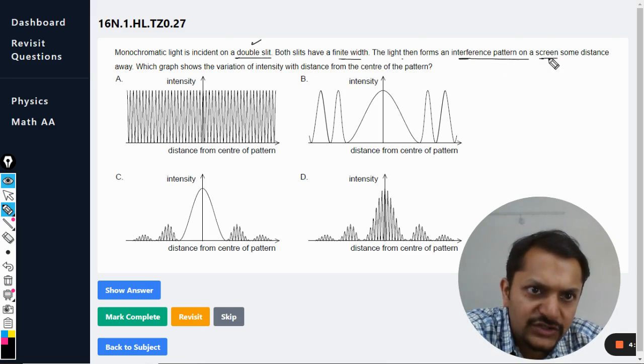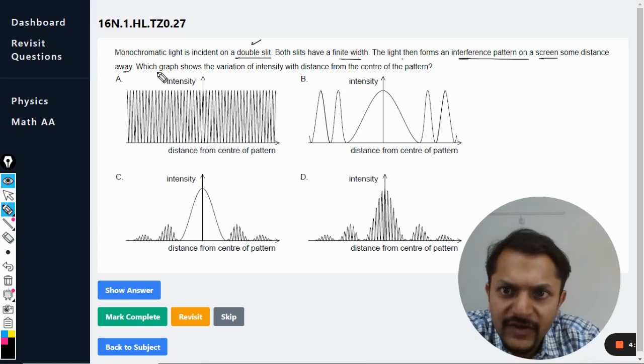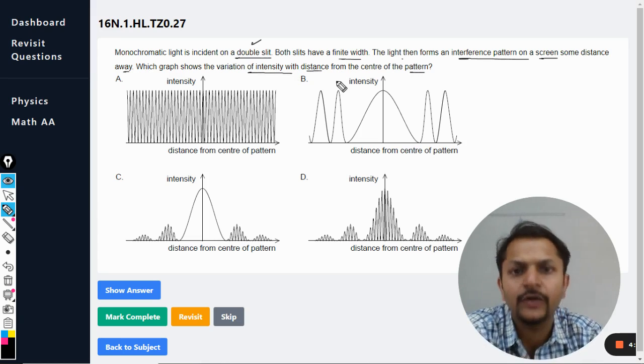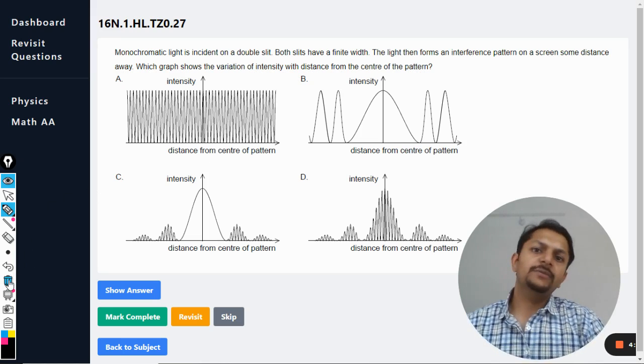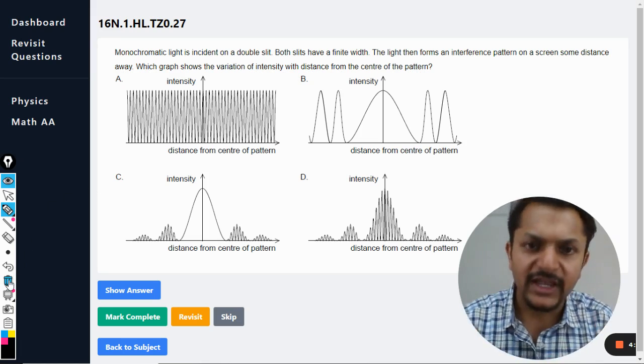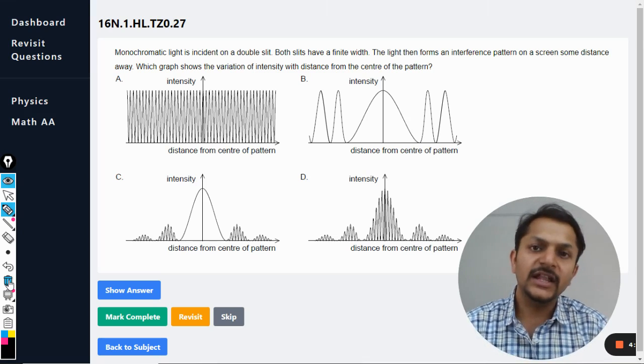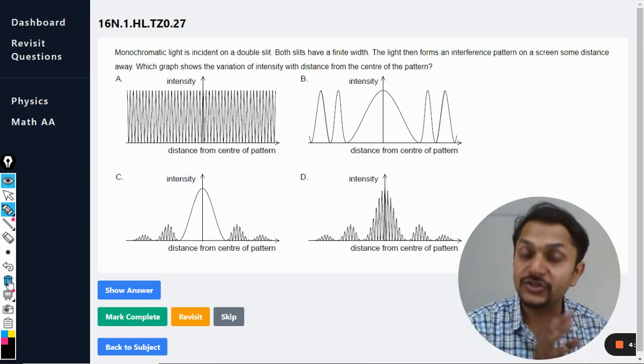Both slits have a finite width. The light then forms an interference pattern on the screen some distance away. Which graph shows the variation of intensity with distance from the center of the pattern? This is just a straightforward question asking what kind of pattern will be there on the screen.